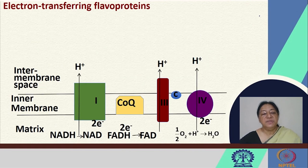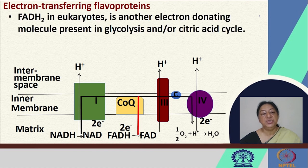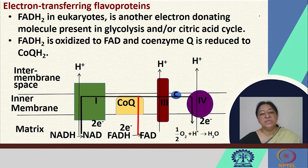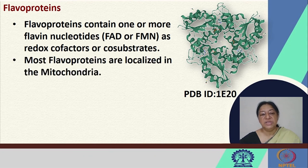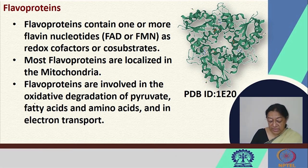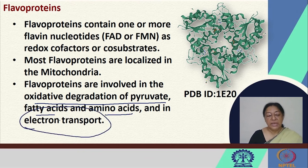In the electron transferring flavoproteins seen throughout this process, we have complexes 1, 2, 3, and 4. FADH2 in eukaryotes is another electron donating molecule present in glycolysis and the citric acid cycle; it is oxidized and coenzyme Q is reduced to CoQH2. Flavoproteins in general contain one or more flavin nucleotides — FADH2 or FMN — as redox factors or co-substrates. They are localized in the mitochondria and are involved in oxidative degradation of pyruvate, fatty acids, and amino acids, and most importantly in electron transport.